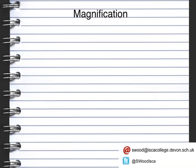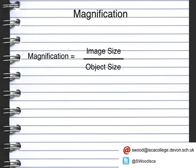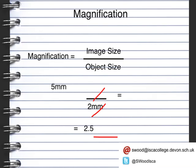Now, magnification — in order to calculate this, it's a very simple equation. The image size is divided by the object size. For example, if you have an image size of 5 millimeters and an object size of 2 millimeters, you will end up with a magnification of 2.5. The other thing to notice is the units: because you divide millimeters by millimeters, they cancel each other out, so there are no units for magnification.